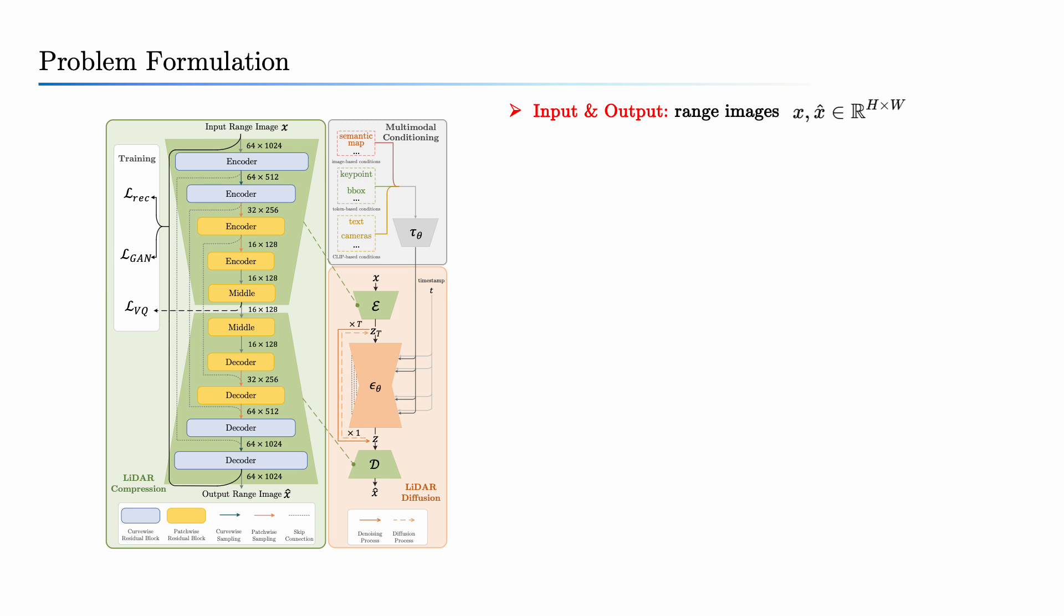We formulate the problem by using range images as both the input and output generation process. To control the generation, we provide several types of input conditions: image-based, token-based, and CLIP-based.